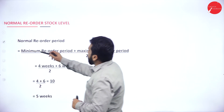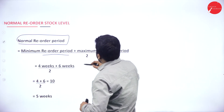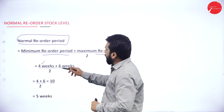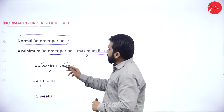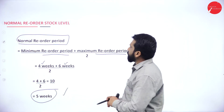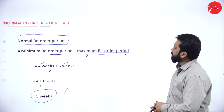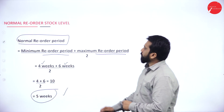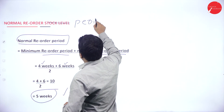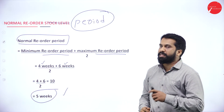Next, normal reorder period. Formula: (minimum reorder period + maximum reorder period) ÷ 2. Minimum is 4, maximum is 6, so (4 + 6) ÷ 2 = 5 weeks. Note: we calculated only the period here, not a stock level.